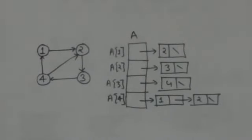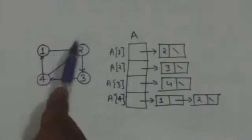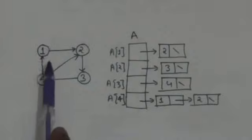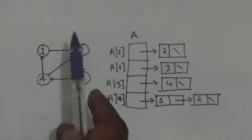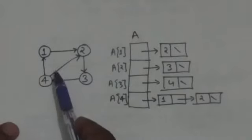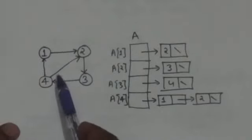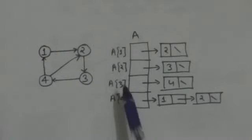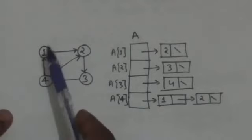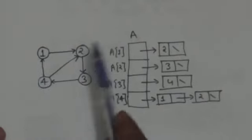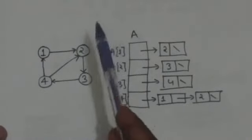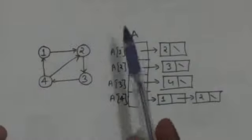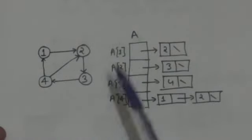Now let us discuss the adjacency list representation of a directed graph. We will see the adjacency list representation of this graph. This graph has four vertices, so in adjacency list representation we will use an array of four lists. Let this graph be represented by array A, so the size of array A will be 4.